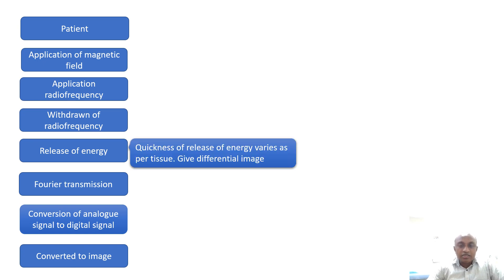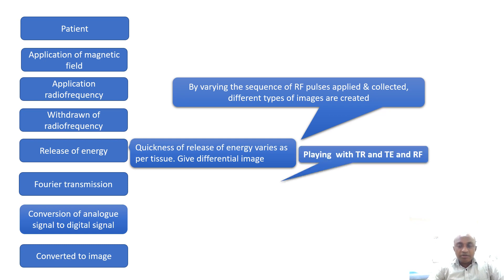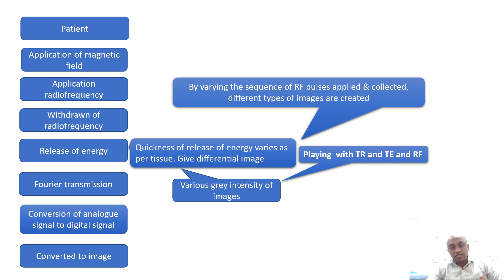The quickness of the release of energy varies as per the tissue and gives a differential image — for each tissue, the release is different. By varying the sequence of radio frequency pulses applied and collected, different types of images are created. The gray intensity of the images is created by the rate of release of energy.